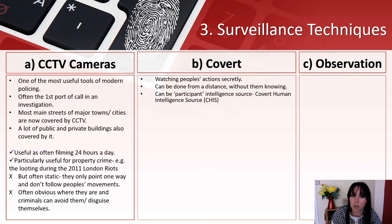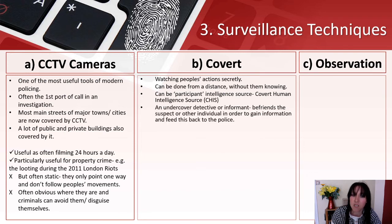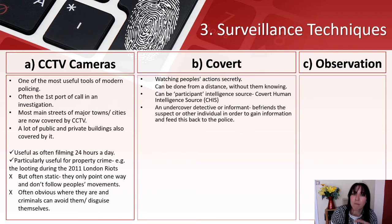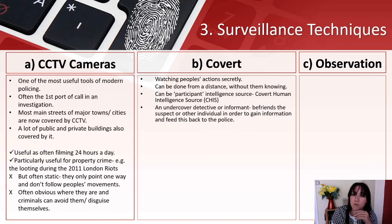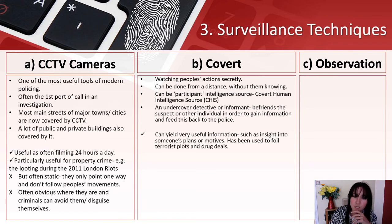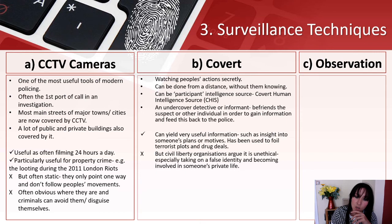Covert surveillance involves watching people's actions secretly, either from a distance without them knowing, or through a Covert Human Intelligence Source (CHIS). This is where an undercover detective or informant befriends the suspect or other individuals in order to gain information and feed this back to the police. It's often used in drug situations and is extremely dangerous if the person is discovered. It's not just something you see in films — it can yield very useful information such as insight into someone's plans and motives, and has been used to foil terrorist plots and drug deals.